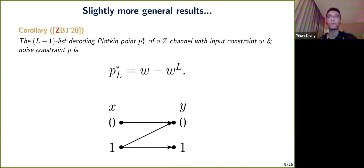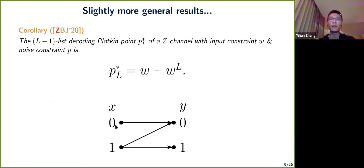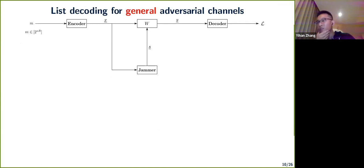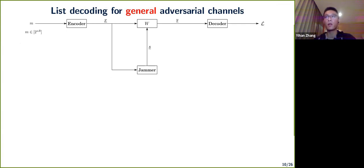For asymmetric (Z-channel) errors — where the channel can only zero out bits but not flip zeros to ones — the threshold turns out to be w minus w^l (with input constraint w). This has been useful in other contexts, such as channel coding with feedback. Now I'll move to a general framework that covers all these examples.